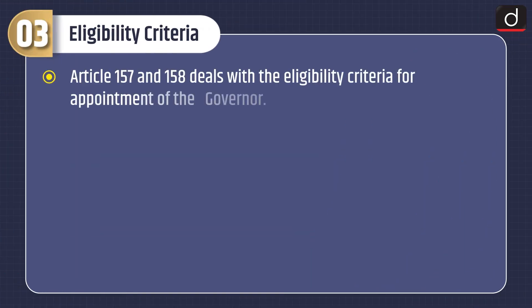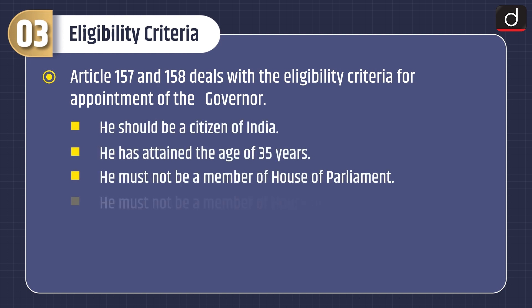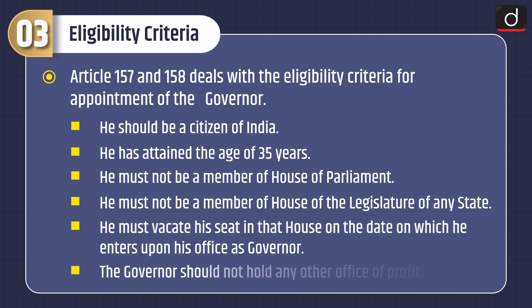Now, let's discuss about the eligibility criteria. Articles 157 and 158 deal with the eligibility criteria for appointment of the governor. He should be a citizen of India and must have attained the age of 35 years. He must not be a member of the House of Parliament or a House of the Legislature of any state. He must vacate his seat in that house on the date he enters upon his office as governor. The governor should not hold any other office of profit.